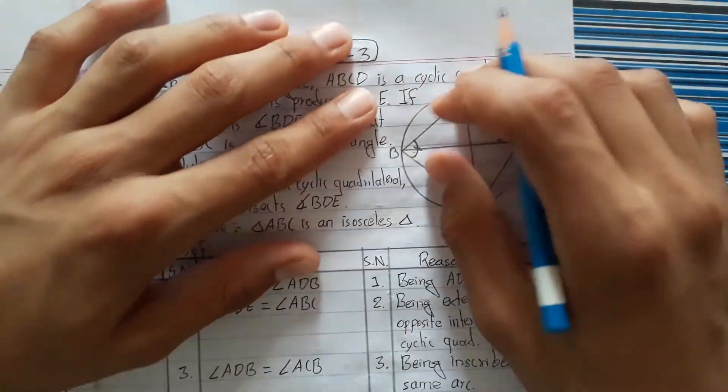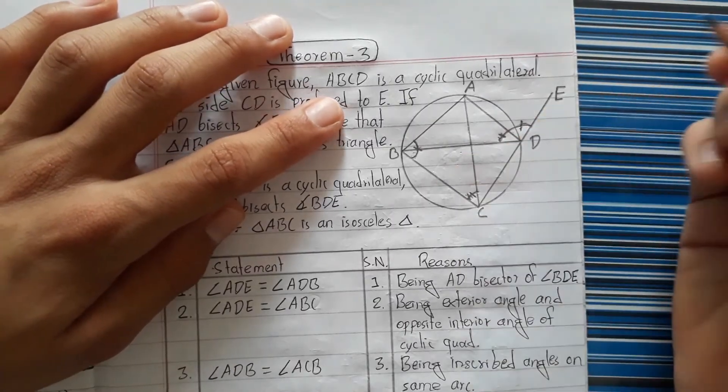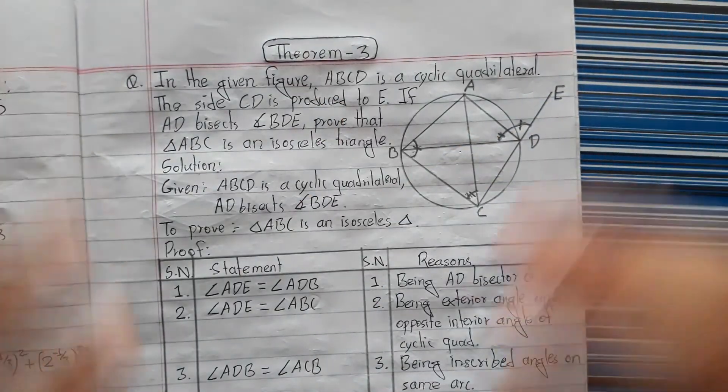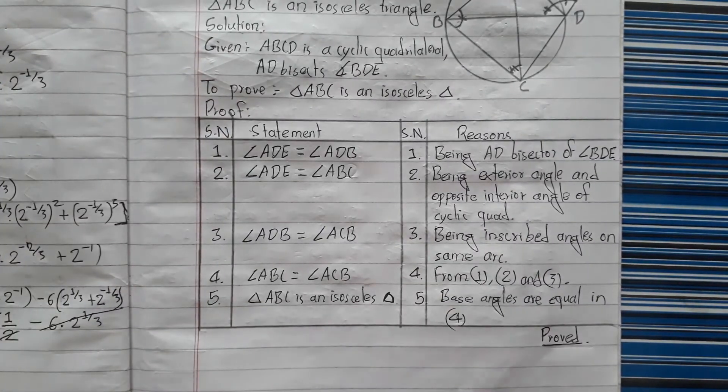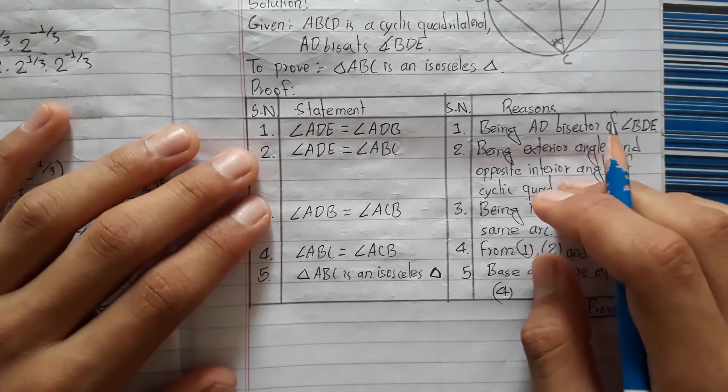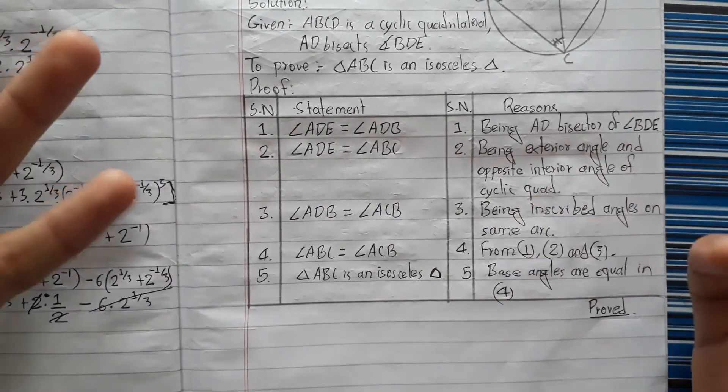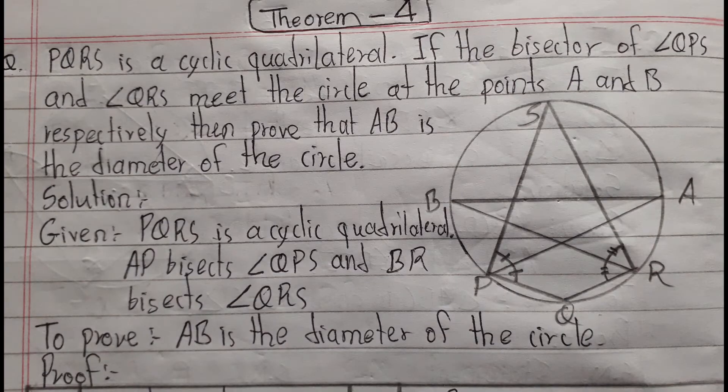Since the triangle has two equal angles, it's an isosceles triangle. I hope you understand. If you have any questions, please comment below. Like and share this video. I have more questions coming in the next videos.